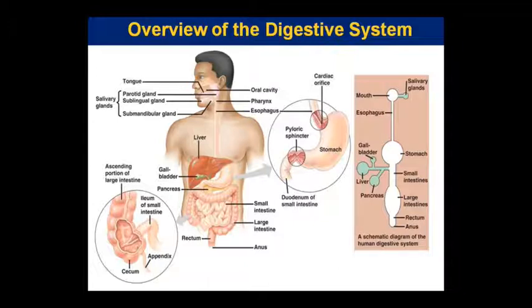The stomach is shown along with liver, gallbladder, and pancreas. This is the elaborated diagram of the stomach. The upper part where the esophagus connects is called the cardiac orifice. The stomach then opens into the intestine through a sphincter called the pyloric sphincter, which regulates the movement of food.